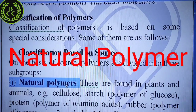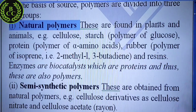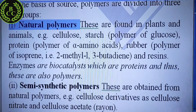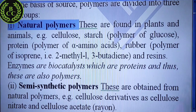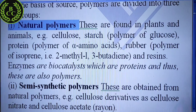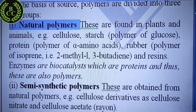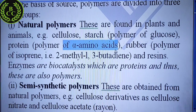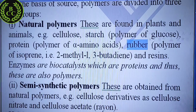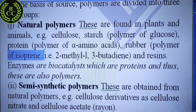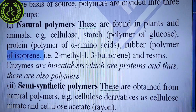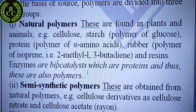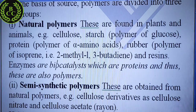Natural polymers are those found in plants and animals. For example, cellulose and starch — whose monomer is glucose. Protein — whose monomer is alpha amino acid; this question is asked in NEET examination. Rubber — whose monomer is isoprene, which is 2-methyl-1,3-butadiene. Enzymes are biocatalysts which are proteins, and thus they are also polymers; they can also be placed in the polymer category.